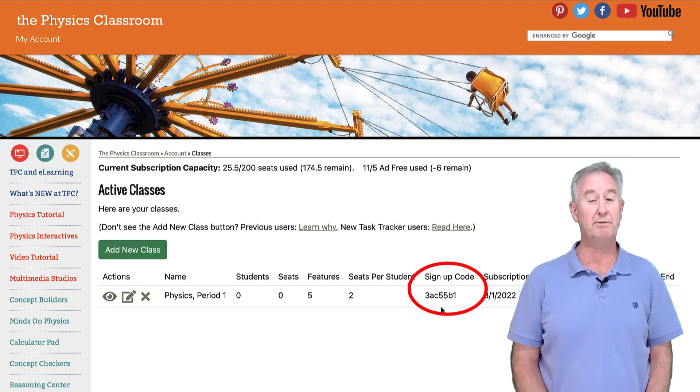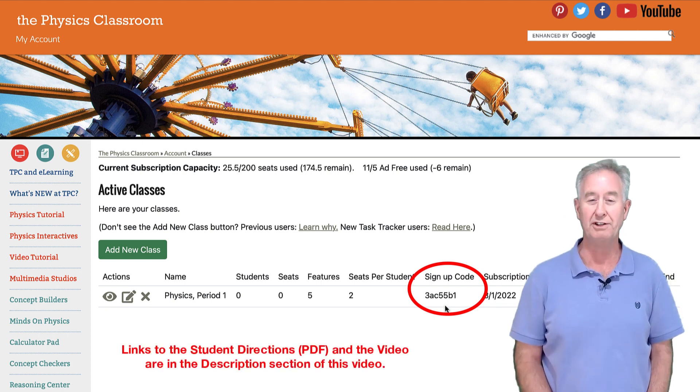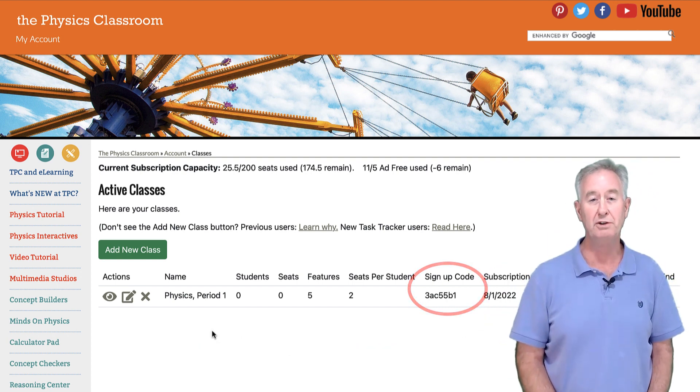The easiest and most sure way to add students to your class is to give this class sign-up code to your students and give them our one-page directions that can be used to sign up or register for your class. We also provide a video that they can follow in order to register for your class. We've left links to the pdf and to the video in the description section of this video if you want to provide it to your students.